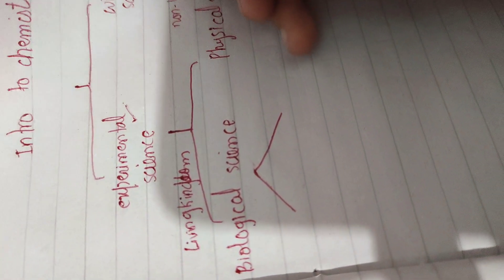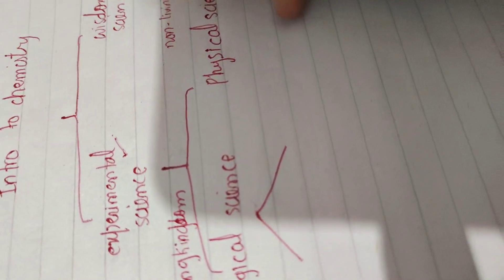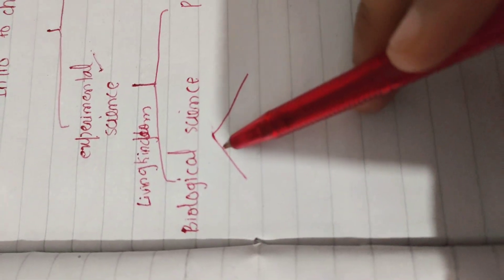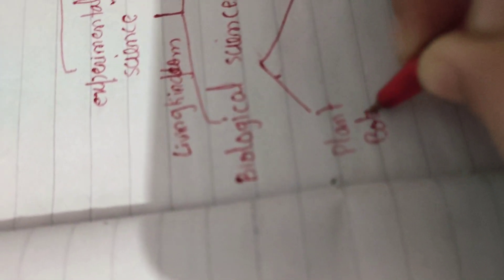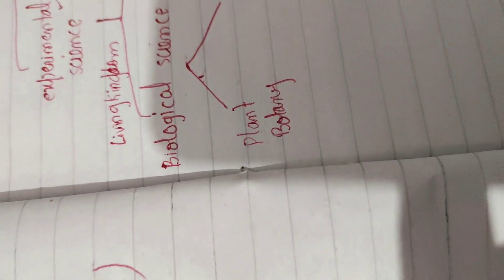And we have non-living kingdom. So in non-living kingdom we have physical science, and in living kingdom we have biological science. Biological science contains plants, that is known as botany. Botany is the study of plants, so we're going to call that living kingdom.